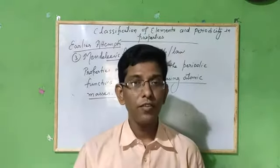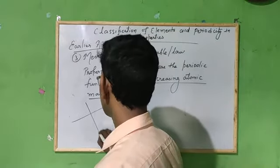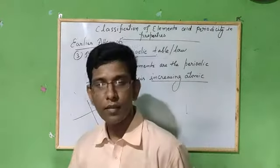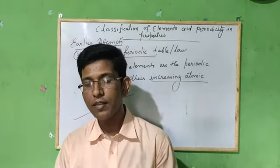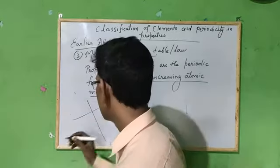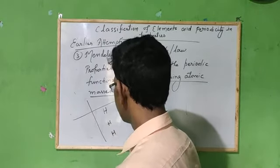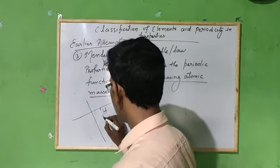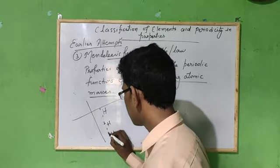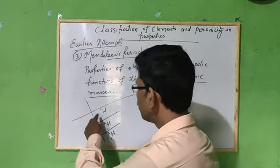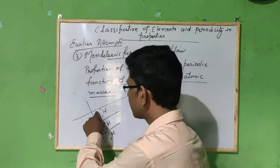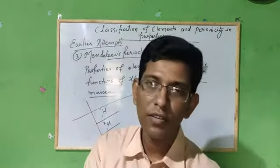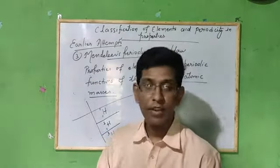But still, there were limitations in Mendeleev's table. One of the most important limitations was that there was no concept of isotopes. For example, hydrogen has three isotopes, each with a different atomic mass — 1, 2, and 3. If you consider atomic mass as the basis, you would have to keep three separate places for a single element hydrogen, which is not possible. So the concept of isotopes was not accounted for in Mendeleev's table, and that was one of the limitations.